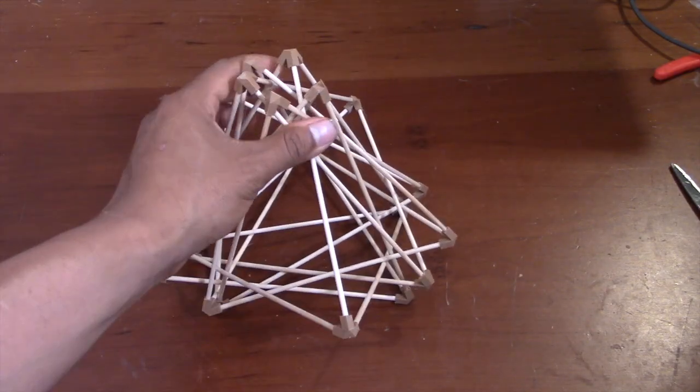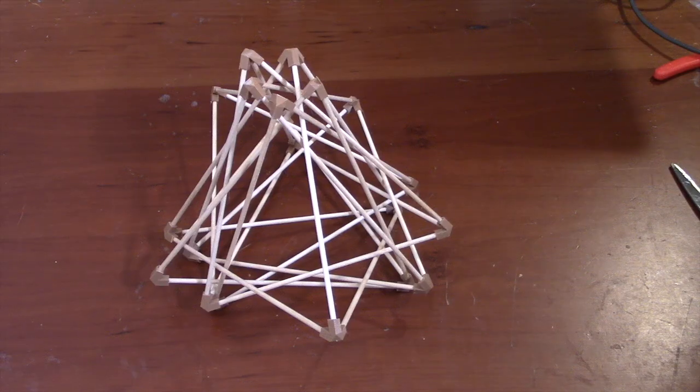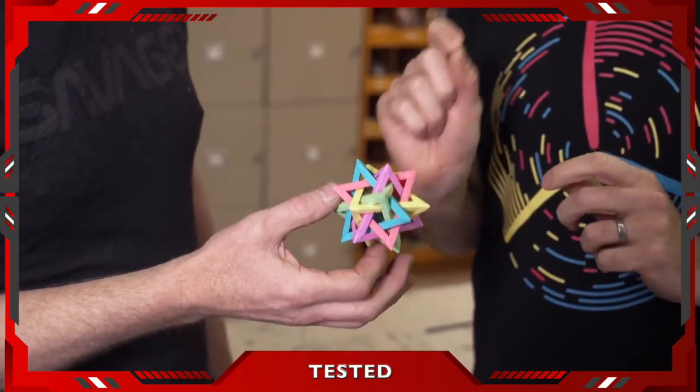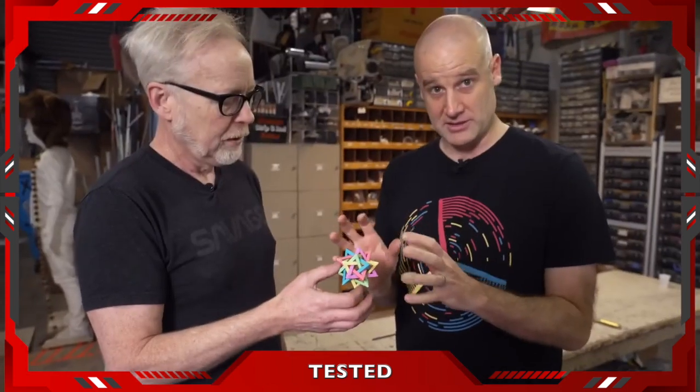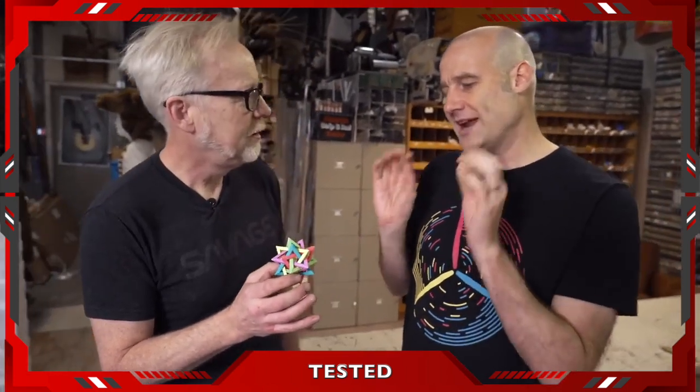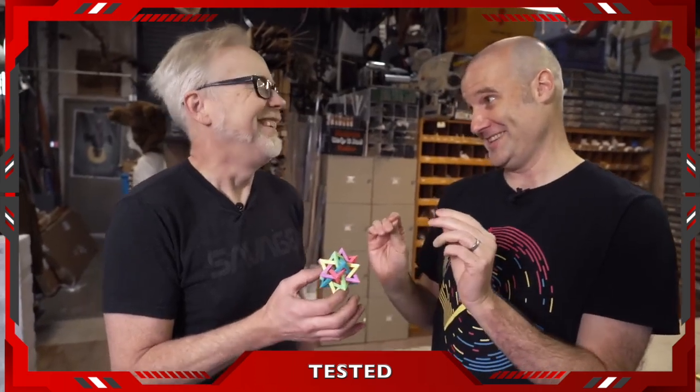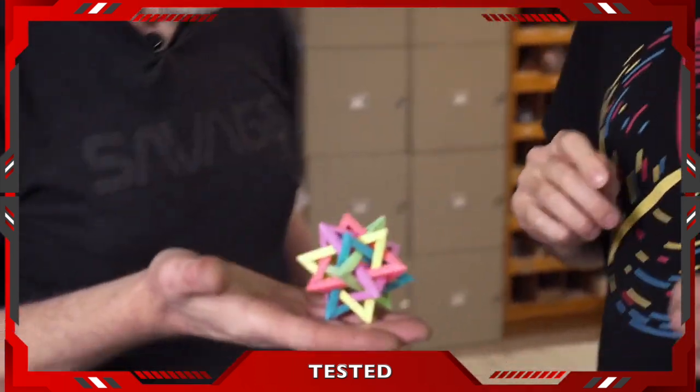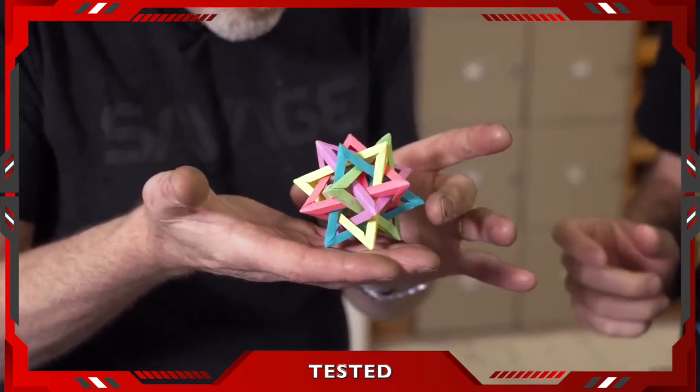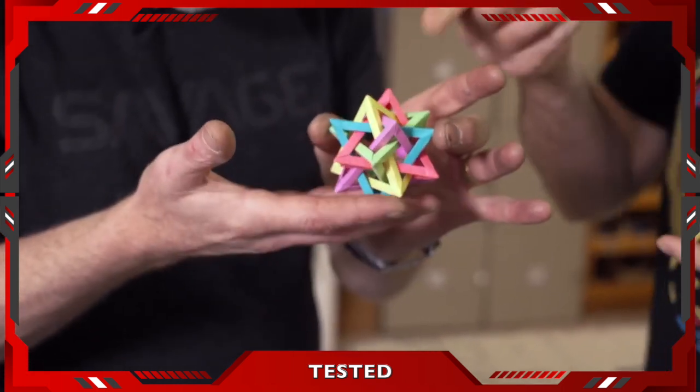And so they addressed this issue by creating a simple paper model. What's very clever about this is it solves one of the major issues with building the five intersecting tetrahedra, which is they don't naturally hold themselves in the neat arrangement. As you can see with the paper model, the lengths and widths of the tetrahedra are just right for the shapes to interlock with each other.